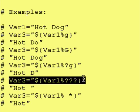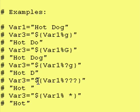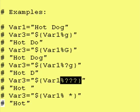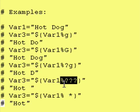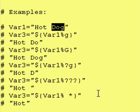And the next line: we have dollar sign, curly brace, var1, percent sign, three question marks, and a curly brace. This says take the contents of var1, put them right there — so we take hot dog, put it right there — and then this says remove from the right-hand side any three characters. So we end up removing dog, and we are left with hot space.